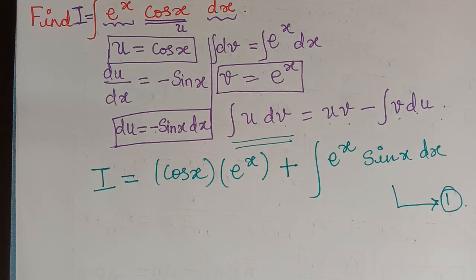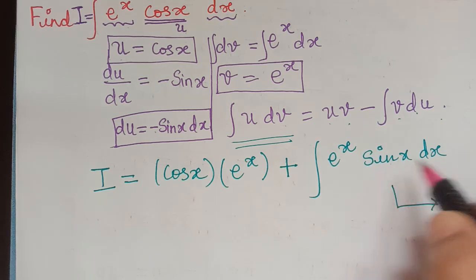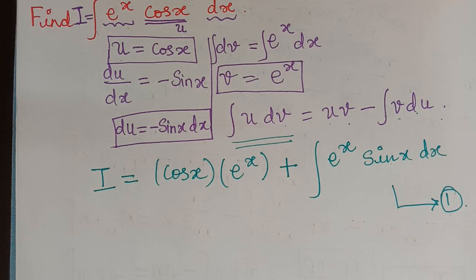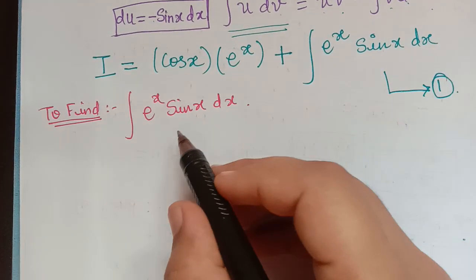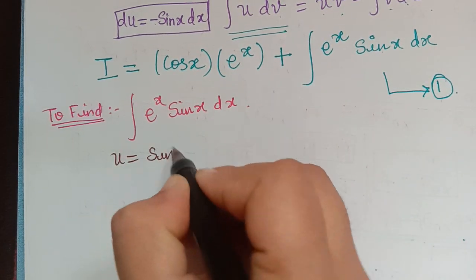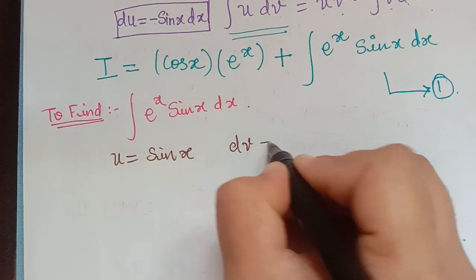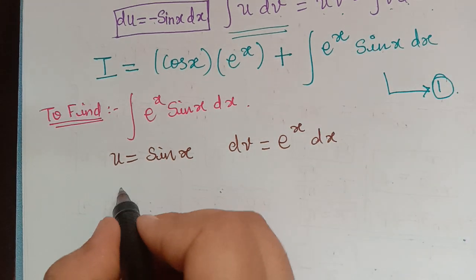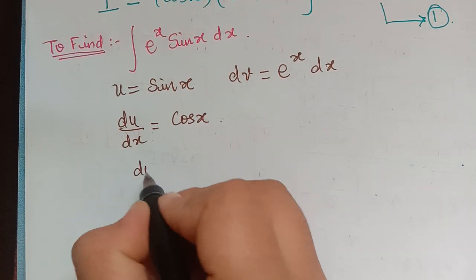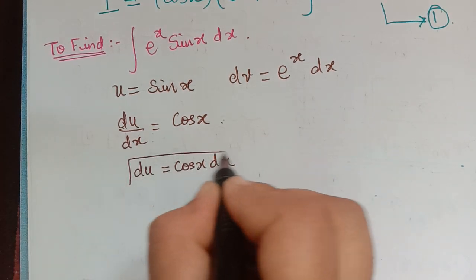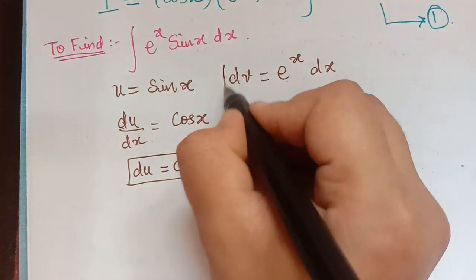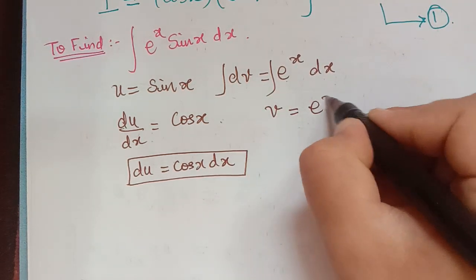In equation 1, we need to evaluate the integral of e^x sin x dx separately. Again using the ILATE rule and integration by parts, the function u will be sin x — since the trigonometric function is chosen first — and dv will be e^x dx. From this, du by dx equals cos x, so du equals cos x dx. Integrating dv on both sides gives v equal to e^x.